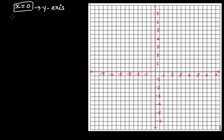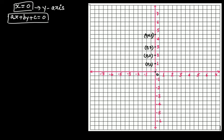Let's verify this. The equation in general is Ax + By + C = 0. The origin is (0, 0), and other points on the y-axis are (0, 1), (0, 2), (0, 3), (0, 4.5), (0, −1) and so on. All points that lie on the y-axis are of the form (0, r), where r can be any real number — 1, 2, −1, −2, √2, √3, √11, 1000, and so on. The x-coordinate is always fixed at 0.